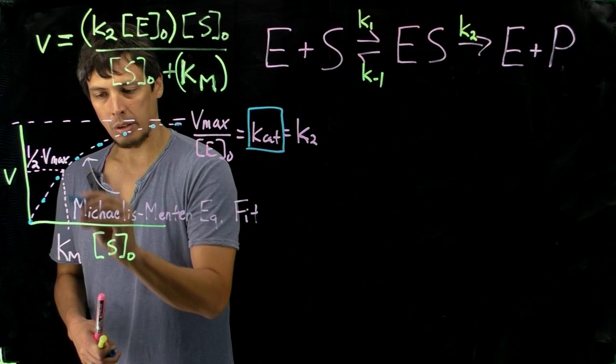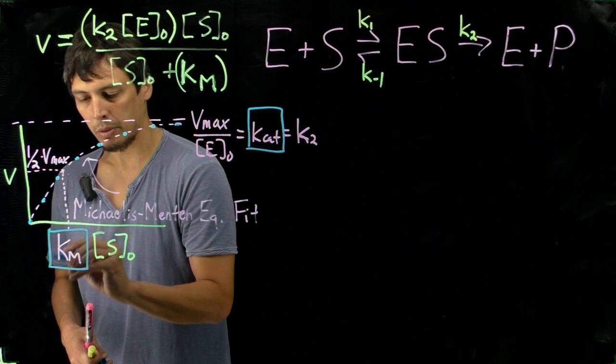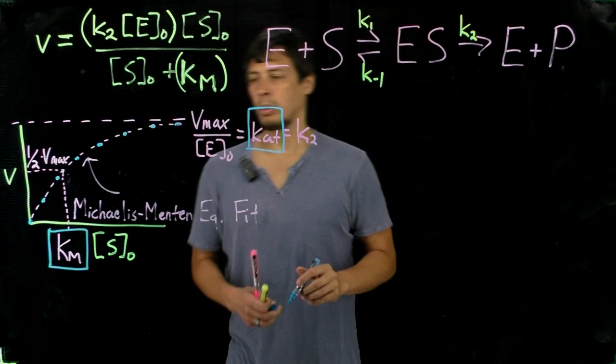and then project that down to the x-axis. And the substrate concentration that this crosses is going to be equal to Km. So we can either do this from the plot or we can do this from the equation. Alright...